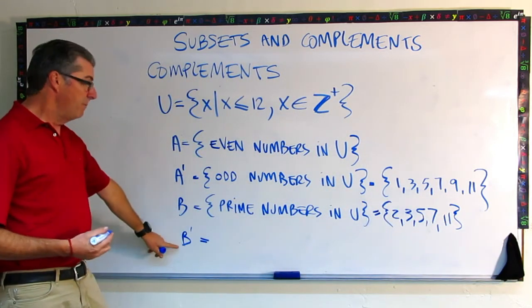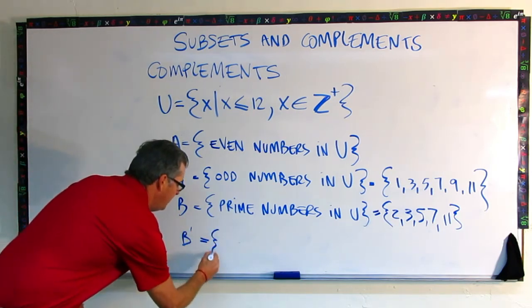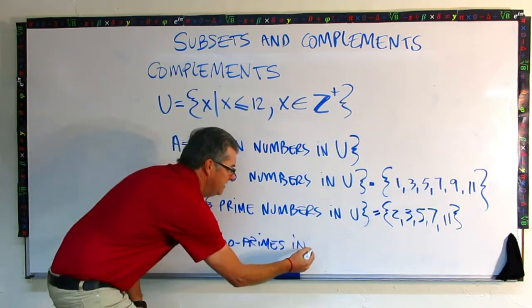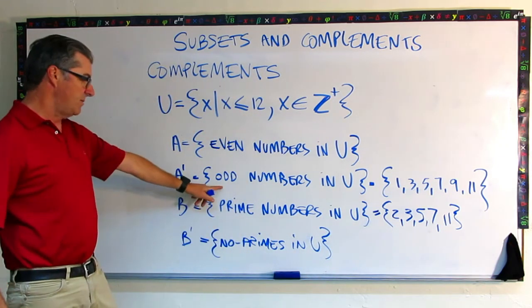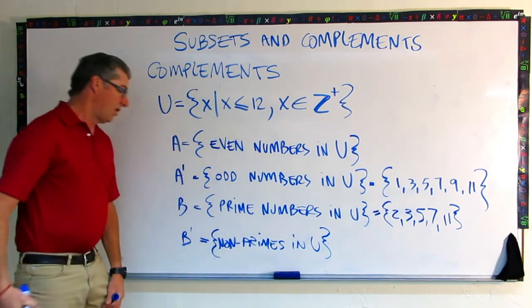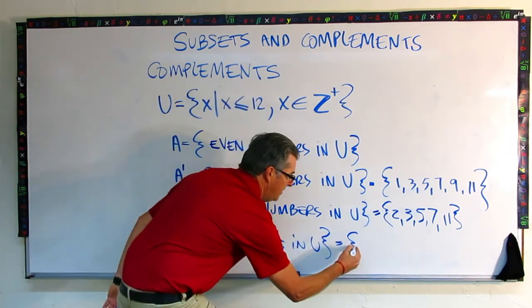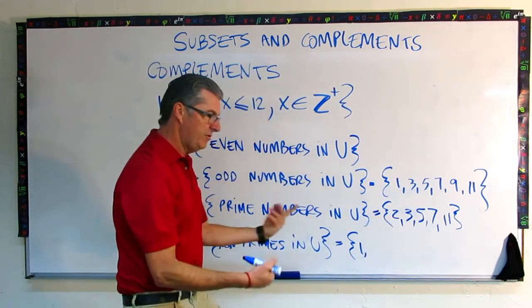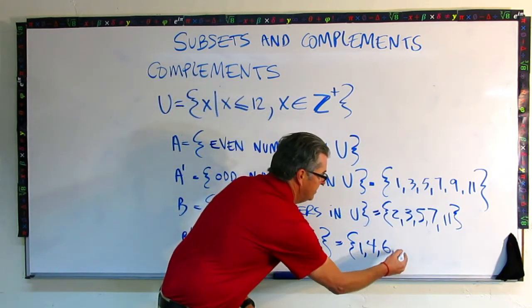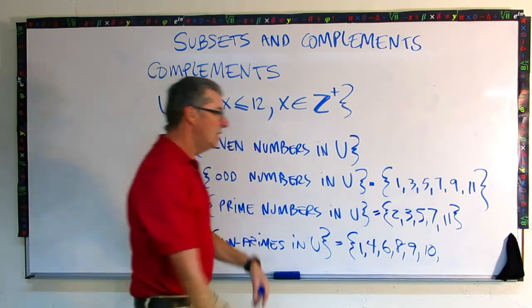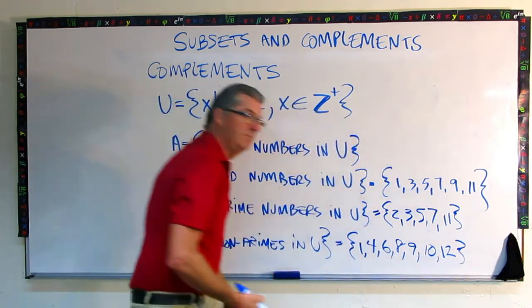So B prime, the first thing we can do is we could write non-prime in U, just like we wrote odd numbers in U. So this is the non-primes. And what that is, it's just all the members of U that aren't these guys. So we've got 1, 2, 3's there, 4 is good, 6 is good, 8 is good, 9, 10. And since this is less than or equal to 12, 12 is also one of our numbers.